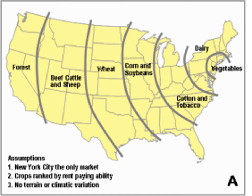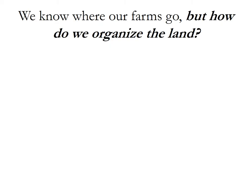Here's the thing to remember: Von Thunen is only a theory. Everything has to be perfect — the land has to be flat, there can't be a river or a mountain — and we're stuck in the 1800s context. What you really have to take from Von Thunen is that where we place our farms is based on how much land they need and the cost of transportation.